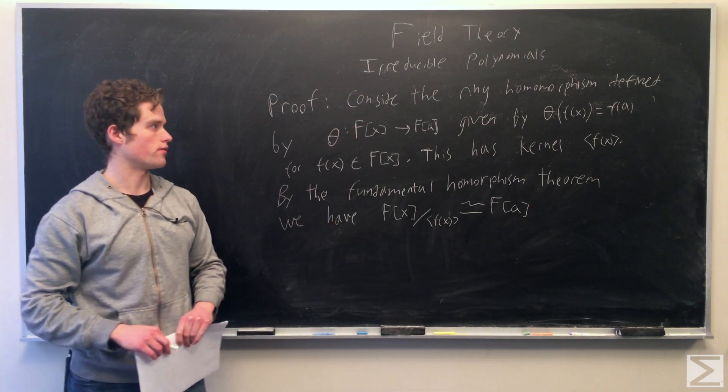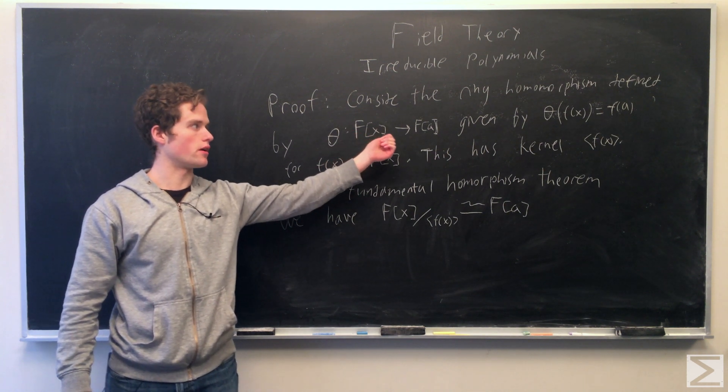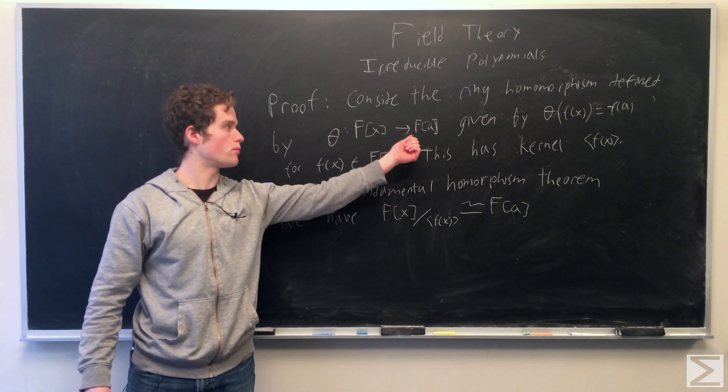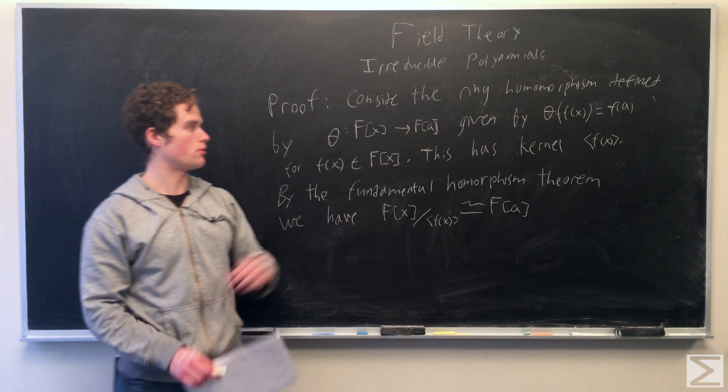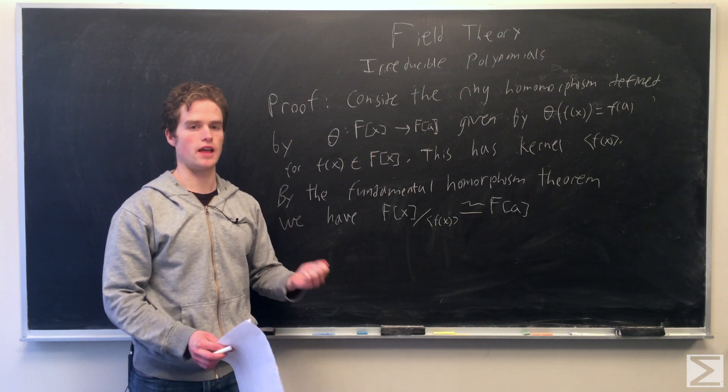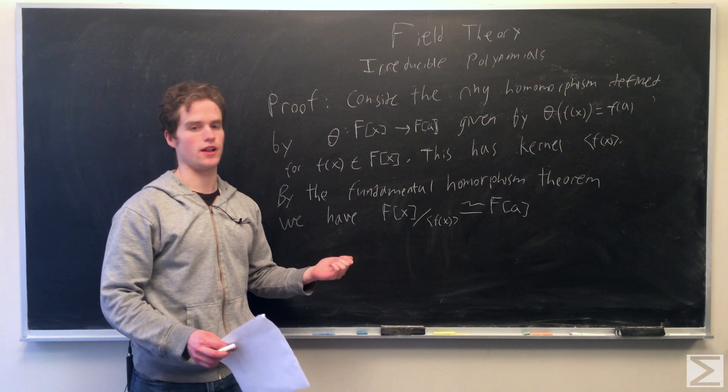Sending a member of our polynomial ring with coefficients in F to our ring with F and a. And it's going to be given by theta of a polynomial, you just plug in a in that polynomial and then calculate the value, f of a.